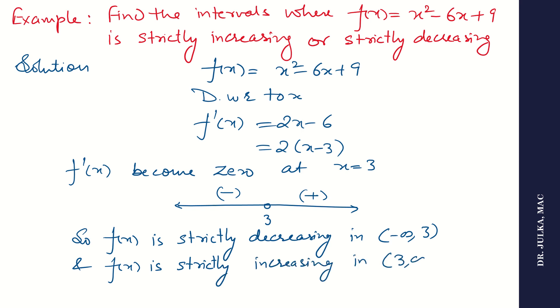Always remember that we are not including 3 here, because we exclude 3. It is a question of strictly increasing and strictly decreasing, so we exclude 3. Always remember this.